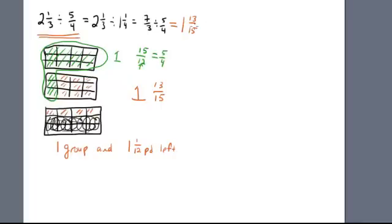The solution is 1 and 13/15, because this division problem is asking how many groups of 1 and 1/4. I have one whole group and 13/15 of my next group.